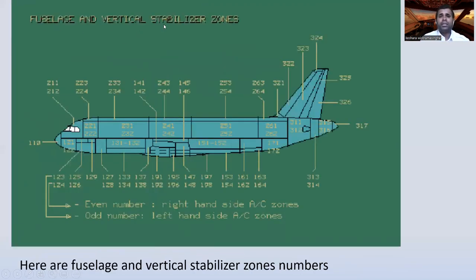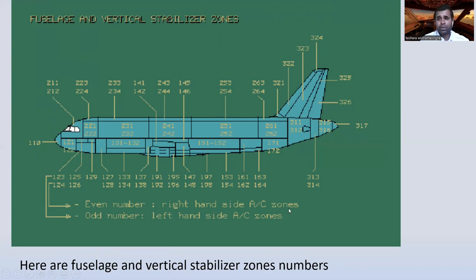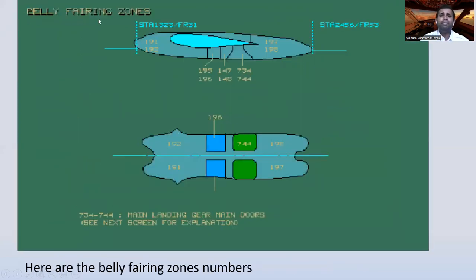Here are the fuselage and vertical stabilizer zone numbers. You can see numbers like 212 and 211 — two numbers because it represents left and right. Zone 195 and 196 are for the belly area. Even numbers are used for the right-hand side of the aircraft, and odd numbers are for the left-hand side. For the belly fairing zones: 191 is odd so it is left-hand side, and 192 is even so it is right-side panel.